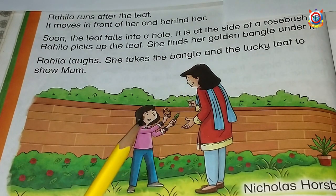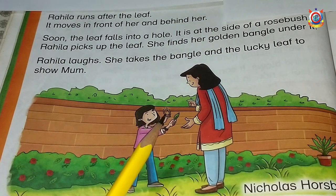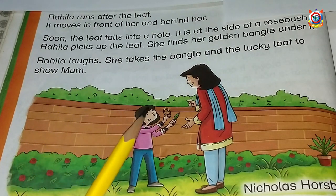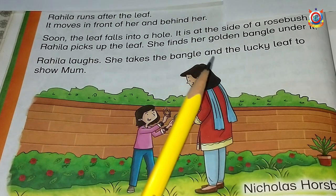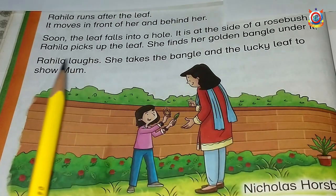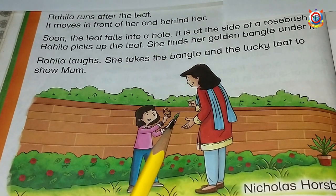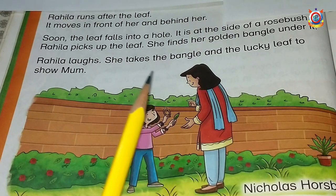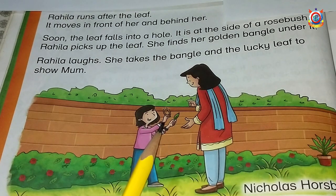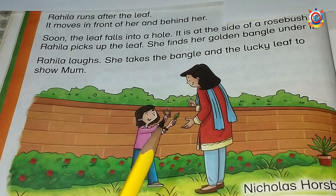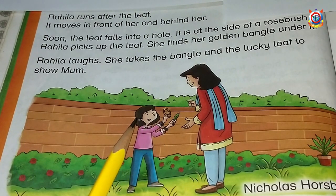Can you see? She is very happy. She finds her golden bangle — this is her golden bangle. رہیلا لافس — رہیلا ہنسی. She takes the bangle and the lucky leaf to show mum. رہیلا نے اپنی گولڈن بینگل اور وہ لکی لیف، جس کے نیچے سے اسے بینگل ملی، دونوں کو لیا اور اپنی امی کو دکھایا۔ رہیلا از ویری ہیپی۔